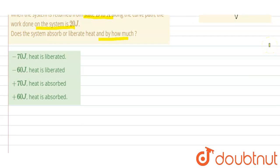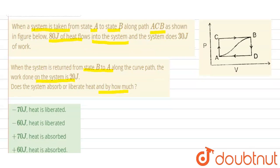So here this is your cyclic process, right? So here what is happening - for path ACB you can write delta E is equals to Q plus W, right? So here delta E is equals to Q is minus 80, W is plus 30.